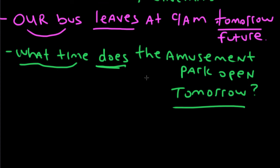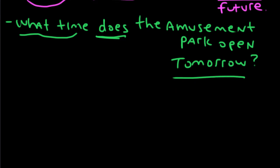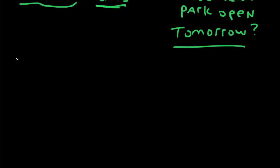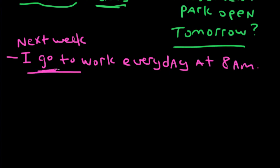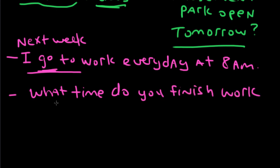We can also use the present simple to talk about people if their plans are fixed like a timetable. If you know someone who has a job and goes to their job every day at the same time, their life has a timetable. For example: next week, I go to work every day at 8 a.m. This is my timetable, so I use the present simple. What time do you finish work tomorrow? Tomorrow is the future, and we're talking about a timetable, so we use the present simple.